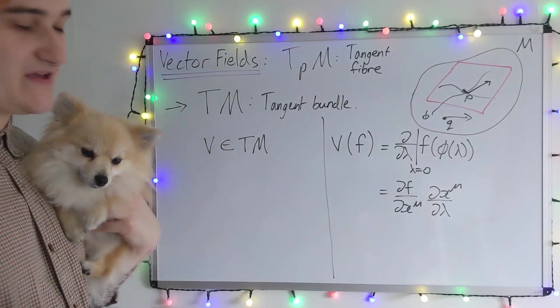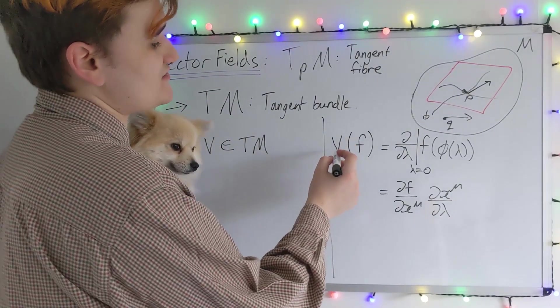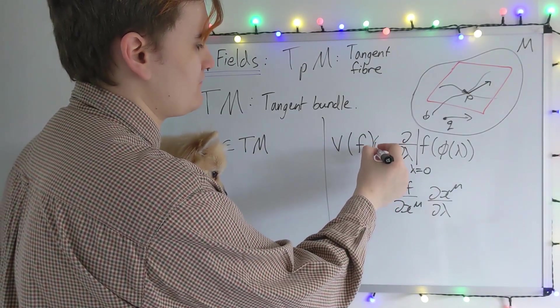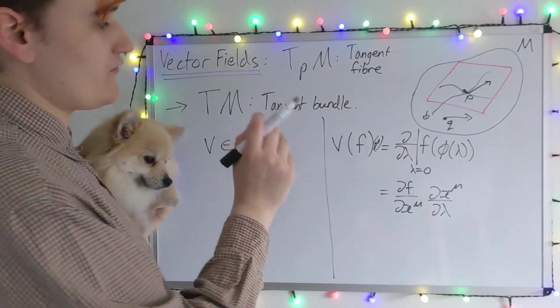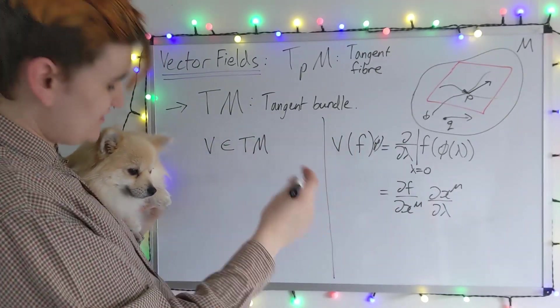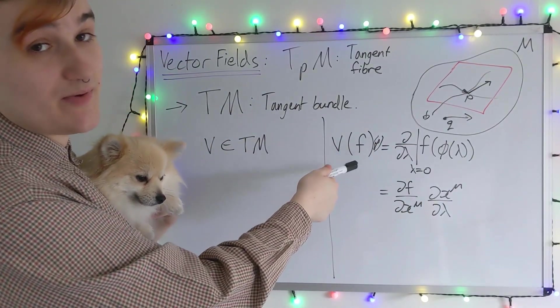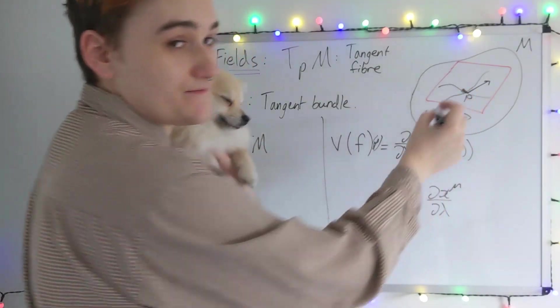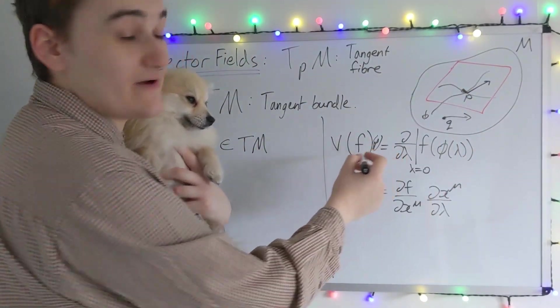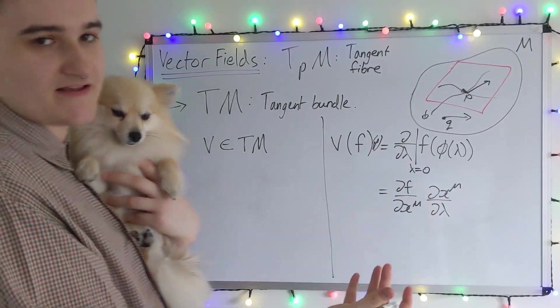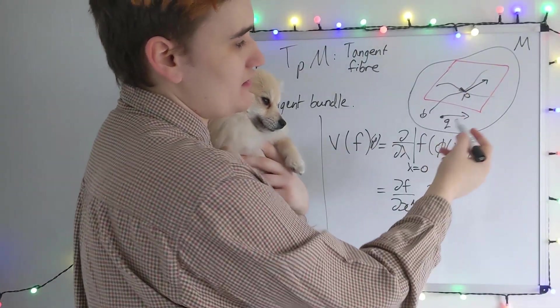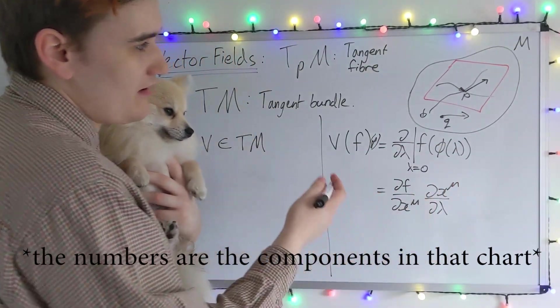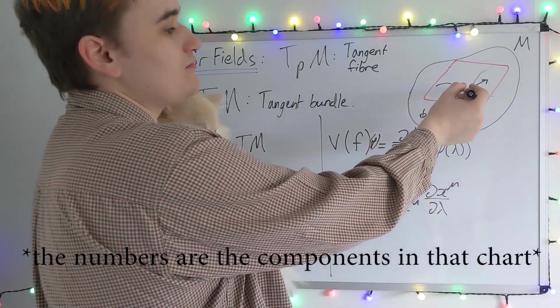If I really wanted to be completely explicit here, I should have written the vector is acting on the function at the point p. Rather than eating an entire function, it's just eating the function evaluated at p. Essentially, the vector at the point will map the function evaluated at the point, which is just going to be a single number. And it's going to return a d tuple of real numbers, or just a vector. This is all at the single point.